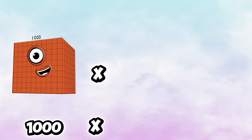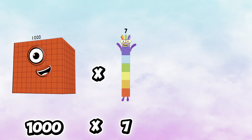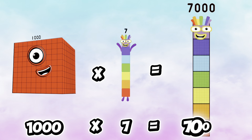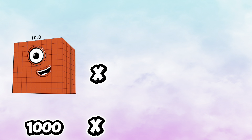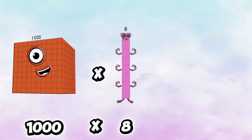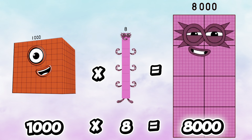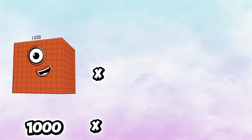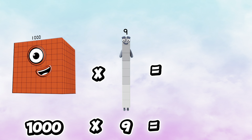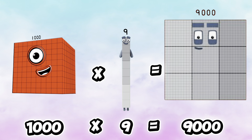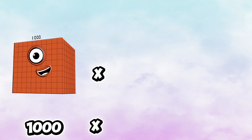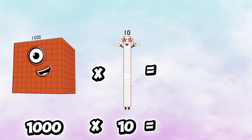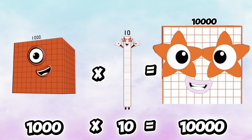1,000 times 7 is equals to 7,000. 1,000 times 8 is equals to 8,000. 1,000 times 9 is equals to 9,000. And lastly, 1,000 times 10 is equals to 10,000.